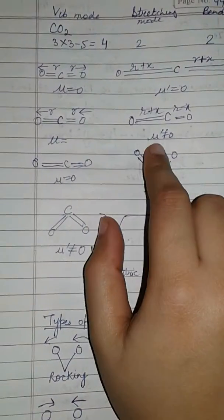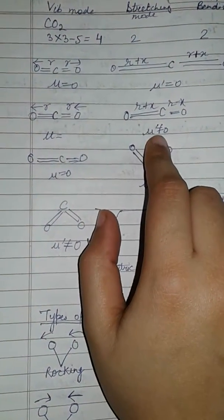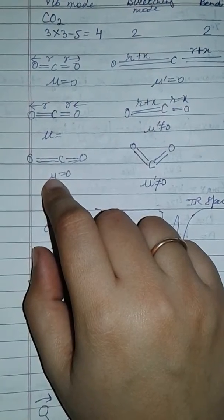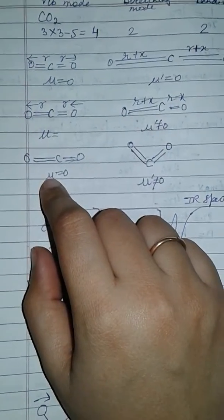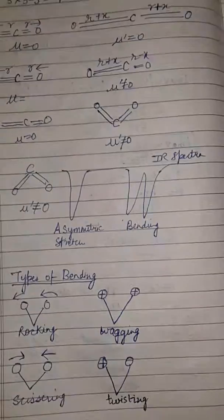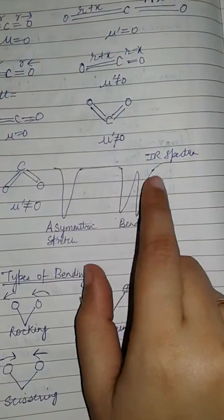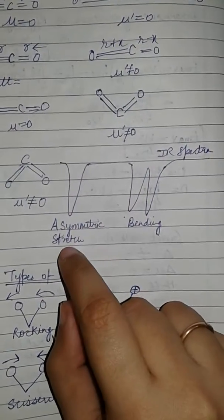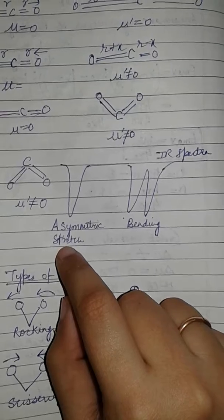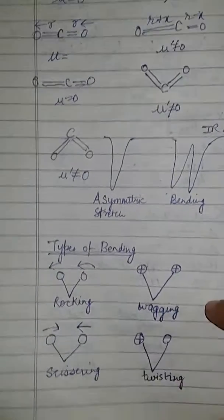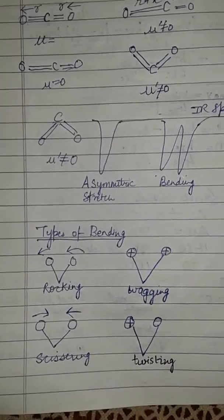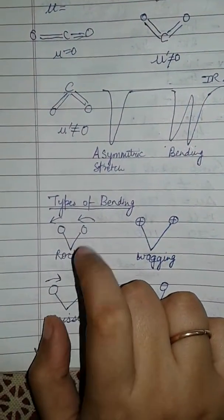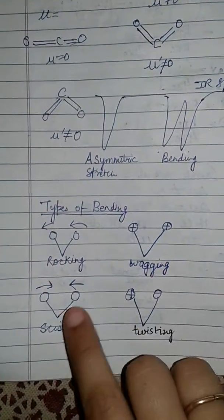For the CO2 molecule, when we do symmetrical stretching there is no dipole moment change. When we do asymmetrical stretching there is a change in dipole moment, and when we do bending there is also a change in dipole moment. The IR spectra of CO2 will show that the asymmetric stretching frequency is greater compared to bending.